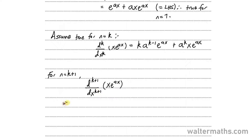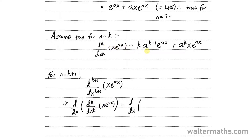This is equal to d by dx of d to the k by dx to the k of x e to the ax — it's like a laws of indices type of thing going on here. From the assumption, d to the k by dx to the power of k of x e to the ax is what we have. So in place of that, I can substitute the right side: k of a to the k minus 1 of e to the ax plus a to the k of x of e to the power of ax.